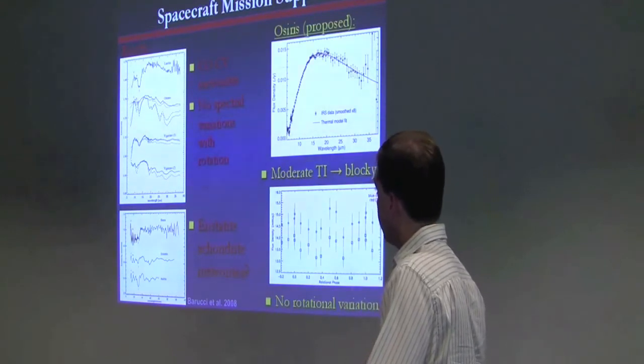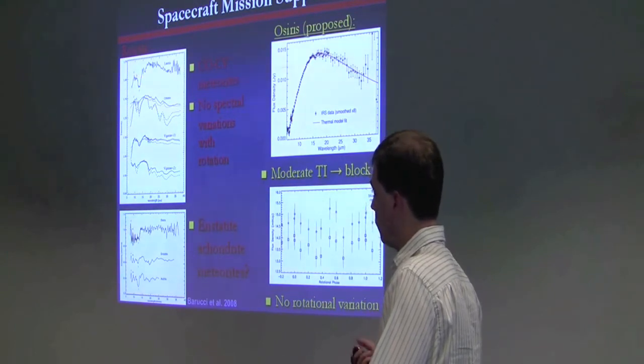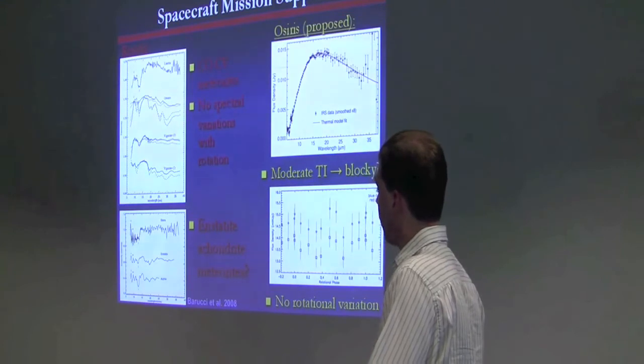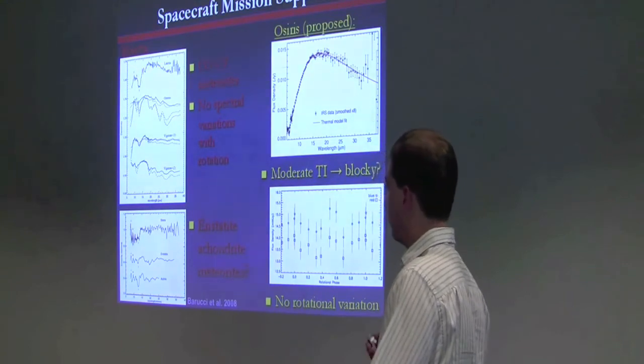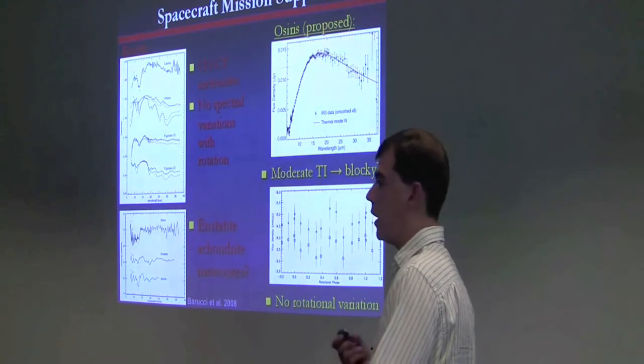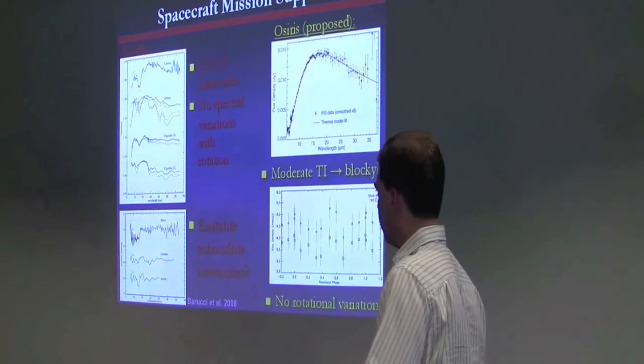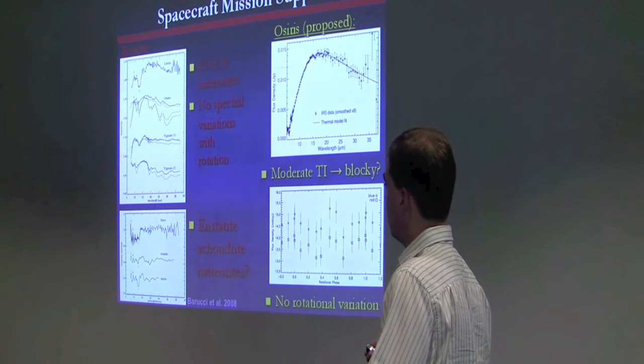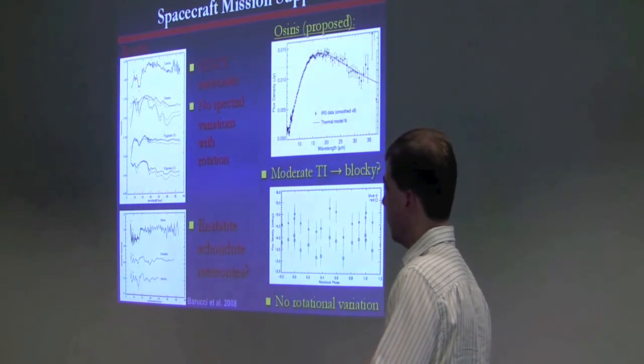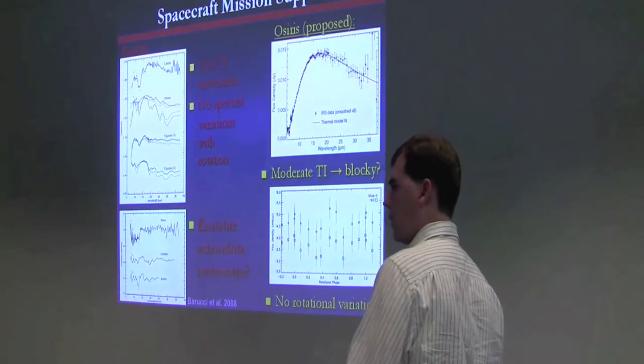Spitzer's also been useful, very useful, for spacecraft mission support, getting data that no other facility can get. For instance, on the left here are Spitzer observations of two asteroids that the ESA's Rosetta mission will fly by on the way to its main comet target. This is Lutetia at the top, which is interesting because its spectrum, its visible near-infrared spectrum, is most consistent with carbonaceous chondrite meteorites, but it's got a high albedo, which carbonaceous chondrite meteorites have low reflectivities because they've got a large number of opaque minerals in them. The Spitzer data confirmed the high albedo, but also confirmed the interpretation of CO carbonaceous chondrite meteorite mineralogy.